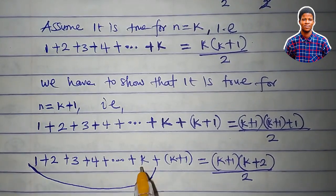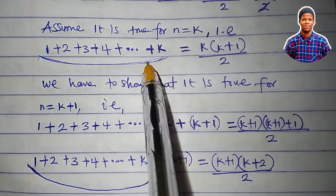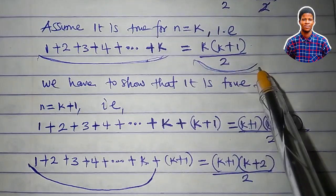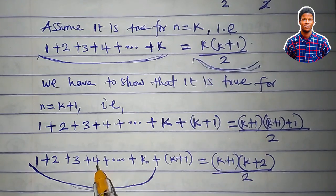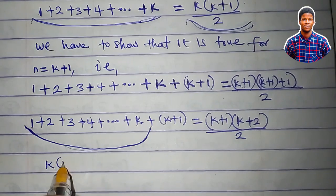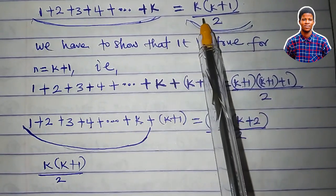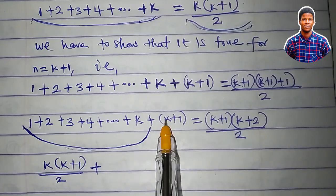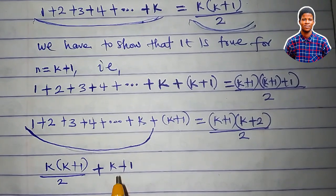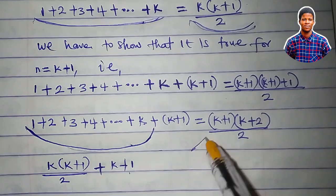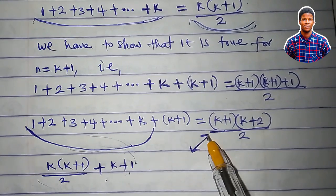From 1 to k is what we have at this point, and this expression is equal to k times k plus 1, all over 2. So in place of the sum from 1 to k, we can write k times k plus 1, all over 2. I just replaced everything from 1 to k with this expression, then plus k plus 1. Our job now is to manipulate this expression to get the target result. We have to simplify this expression to give us the desired form, and when we are able to do that, then the proof is complete.